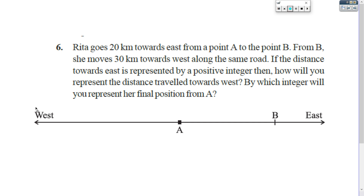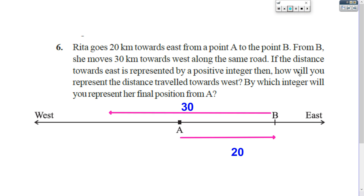From B to west direction, how will you represent the distance — by which type of integer, whether positive or negative? By which integer will you represent her final position from A? If east is positive, then west is obviously negative. So write negative integer.